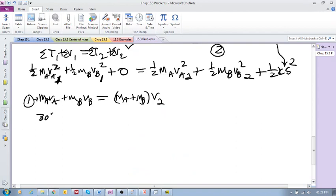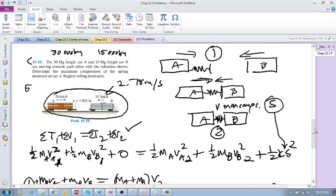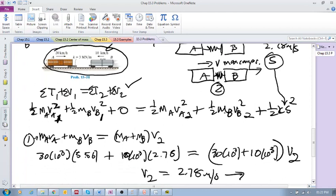We're going to have 30×10³ times 5.56, then we're going to have plus 10×10³ times 2.78, and then this will be 30×10³ plus 10×10³ times v₂. If you solve for v₂ you will actually get 2.78 meters per second to the right. So at maximum compression they both start traveling to the right at a velocity of 2.78, but we're still not done.